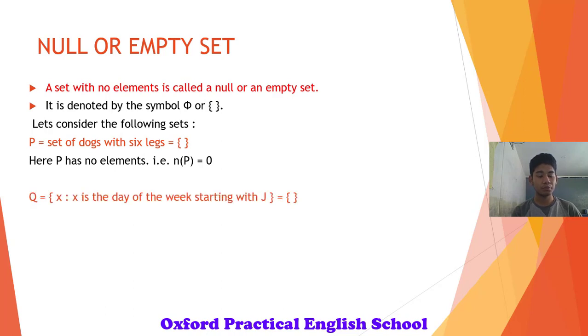Set Q, X is such that X is the day of the week starting with J. Is there any day of the week whose name starts with the letter J? No. So therefore, Q has no elements and hence it is a null set.